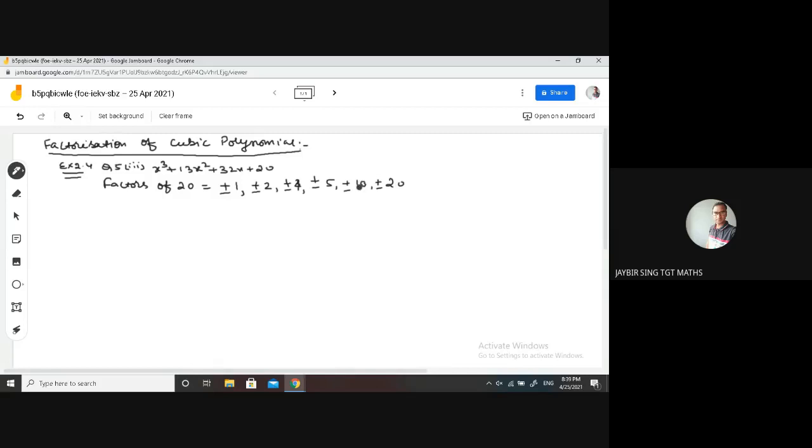Now we have to see that by putting which factor this is becoming 0. So let's try putting x is equals to minus 1. Putting x is equals to minus 1 in the given polynomial. You can put x is equals to plus 1. If you are getting 0, you can put that in the given polynomial.